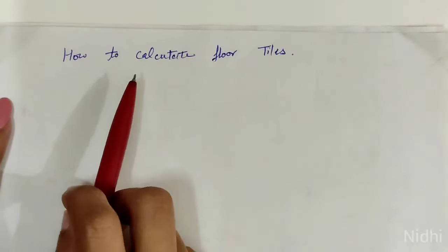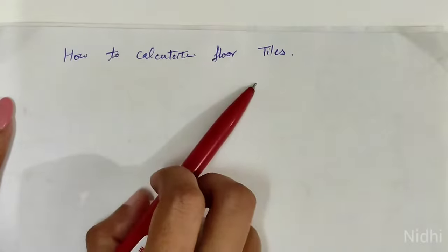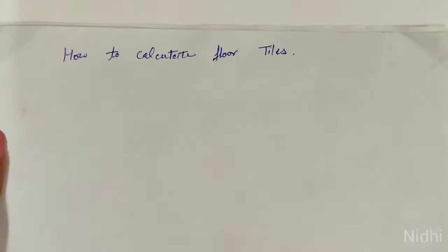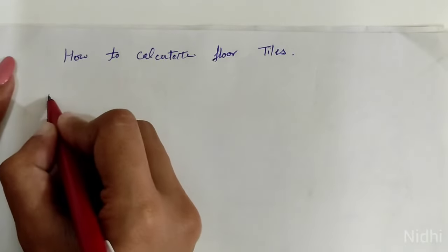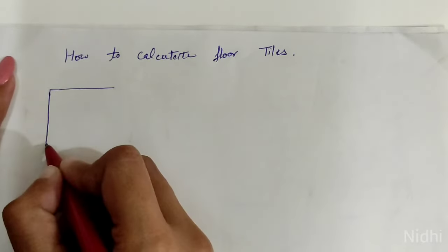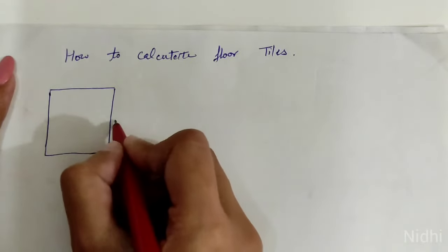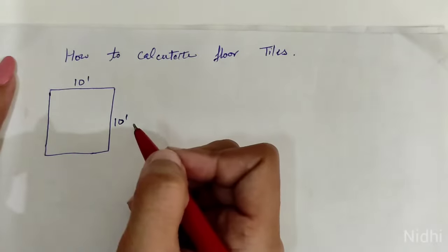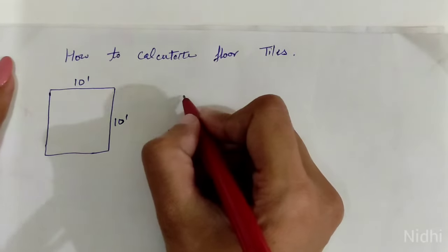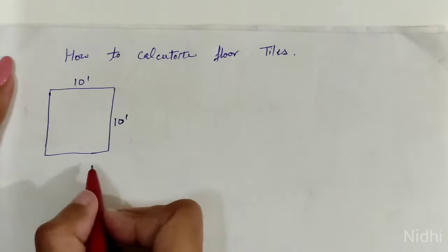In this video we will learn how to calculate floor tiles. For example, we have one room and the room size is 10 feet by 10 feet. First, write the floor length, that's 10 feet, and write the floor width, that's again 10 feet.